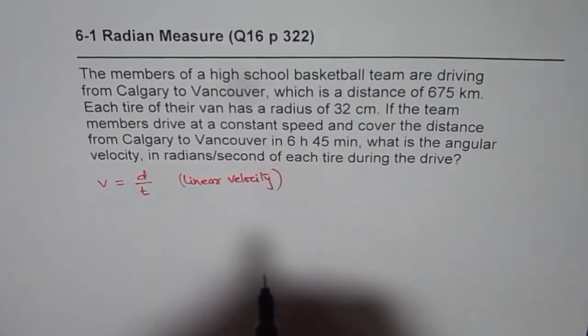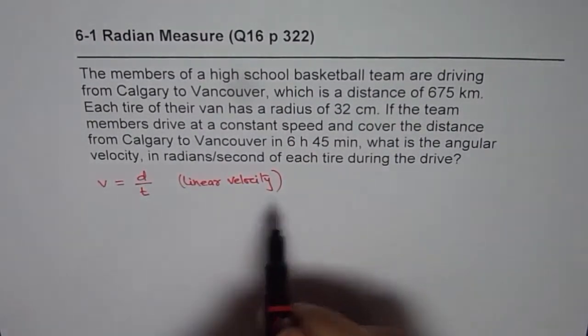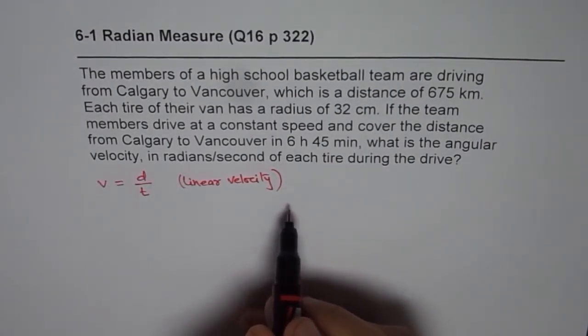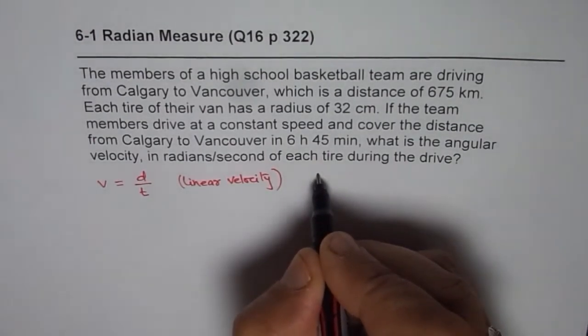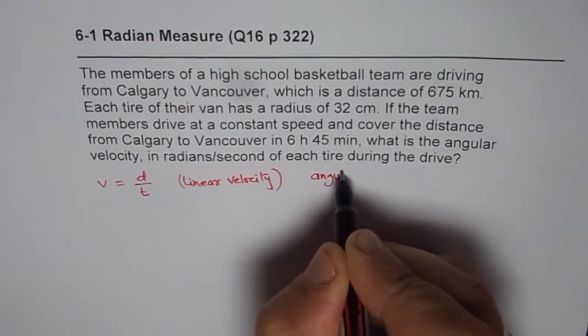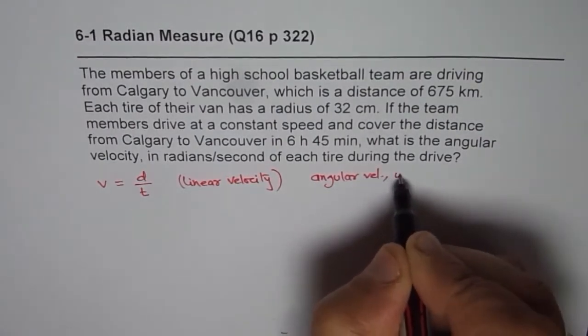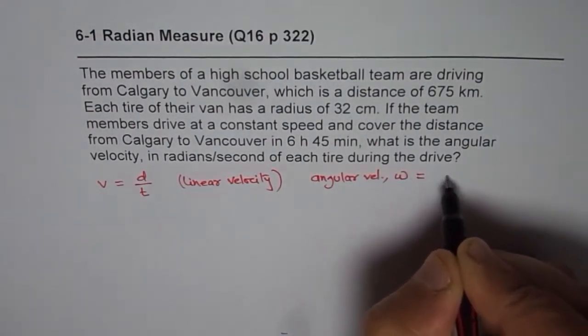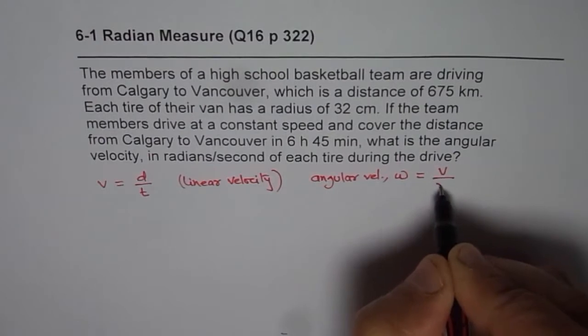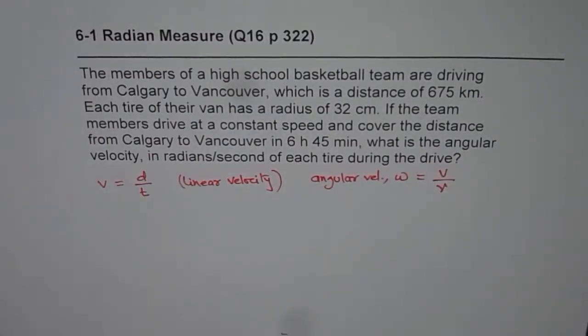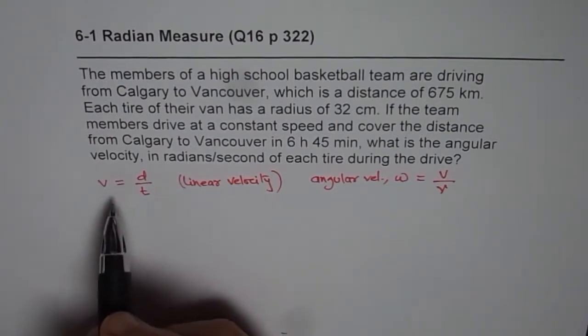The second formula relates linear and angular velocity. I have videos which will show you how they are related, but angular velocity, which we normally write as omega, equals linear velocity divided by the radius. These two formulas get you the value of angular velocity from the linear velocity. We are already given distance and time, so their ratio can give us velocity to start with.